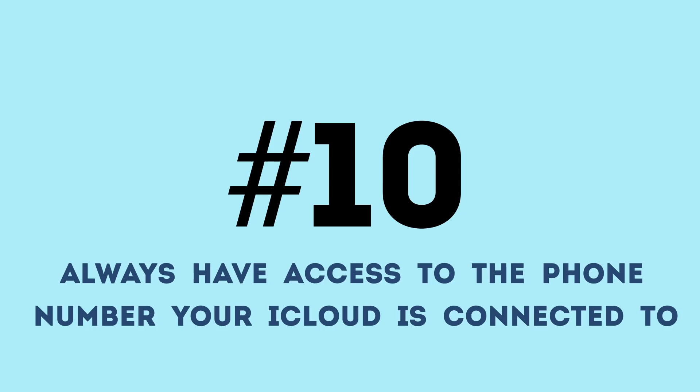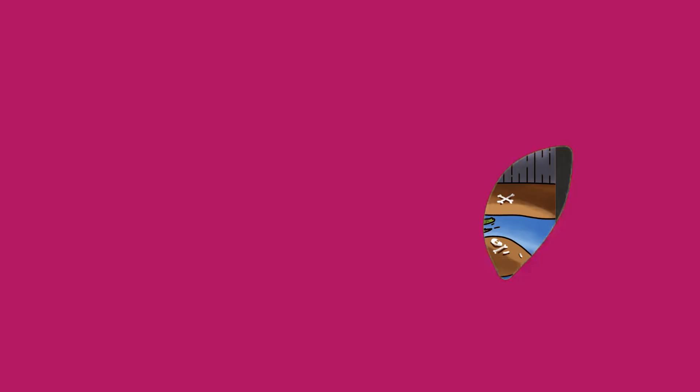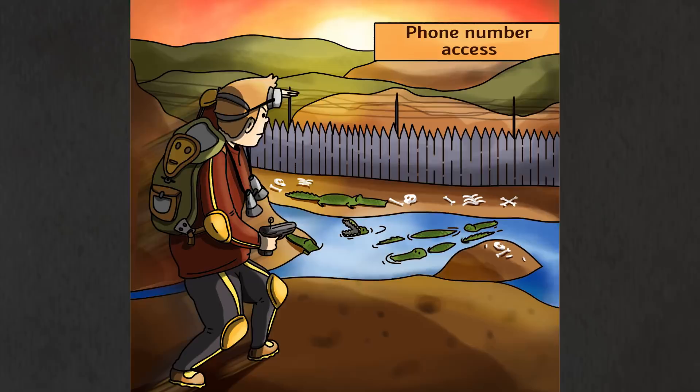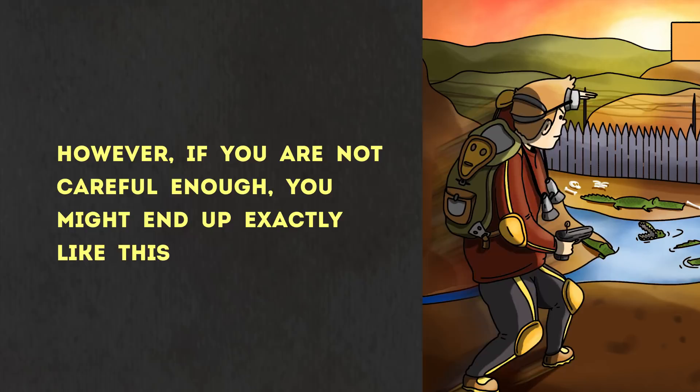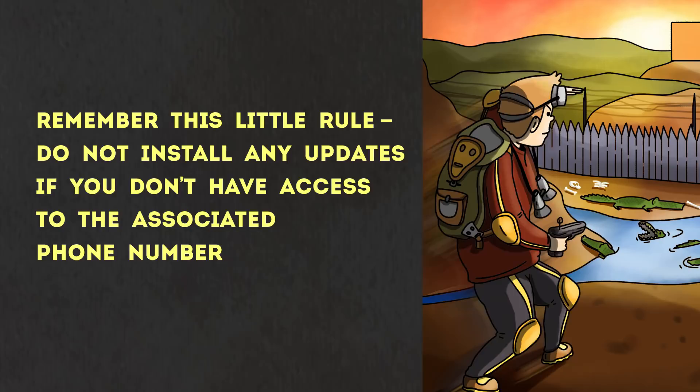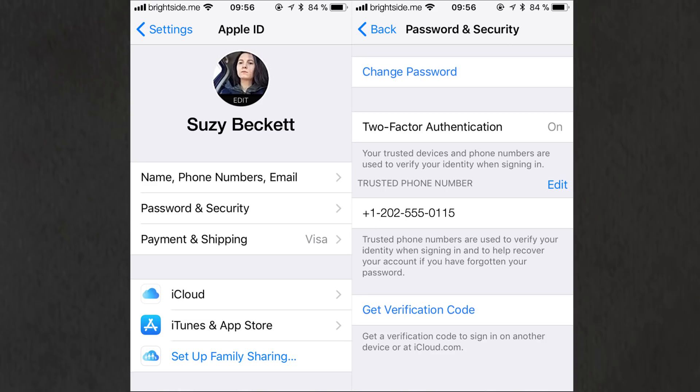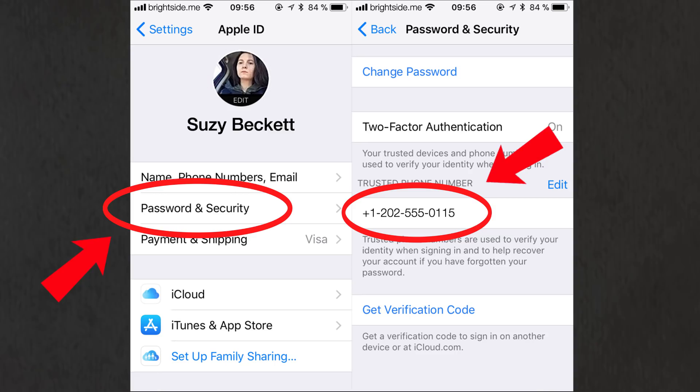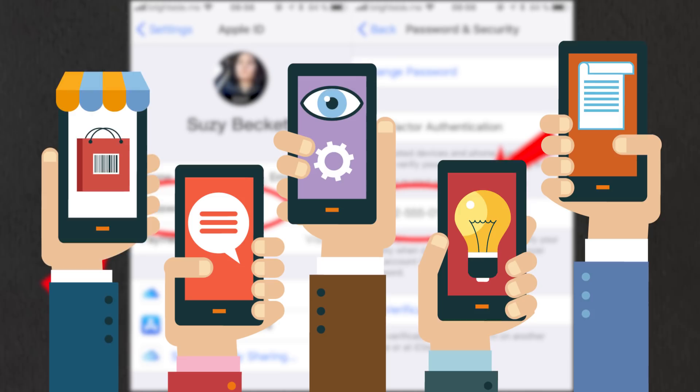Number 10: Always have access to the phone number your iCloud is connected to. When you have a normally functioning phone in your hands, it's nearly impossible to imagine how hard it is to live without it. However, if you are not careful enough, you might end up exactly like this. Remember this little rule: Do not install any updates if you don't have access to the associated phone number. After the reboot, you will have to type in the code sent to the phone number. And if you can't do that, you will have to go through a very long procedure of restoring your account in the Apple Store. It might take so long that you will have to use some other phone. So if you want to avoid it, take care of the phone number. You can also link a few numbers just in case.